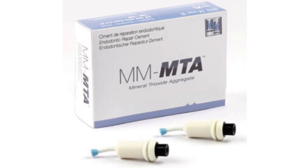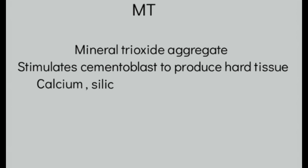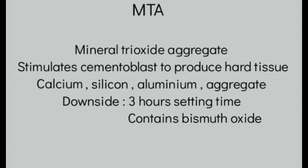The next material is mineral trioxide aggregate, also commonly called MTA. It works differently — it stimulates cementoblasts to produce hard tissue. So calcium hydroxide targets odontoblasts to form dentine, whereas MTA targets cementoblasts to form hard tissue. From the name we know it's an aggregate of minerals: calcium, silicon, and aluminum.